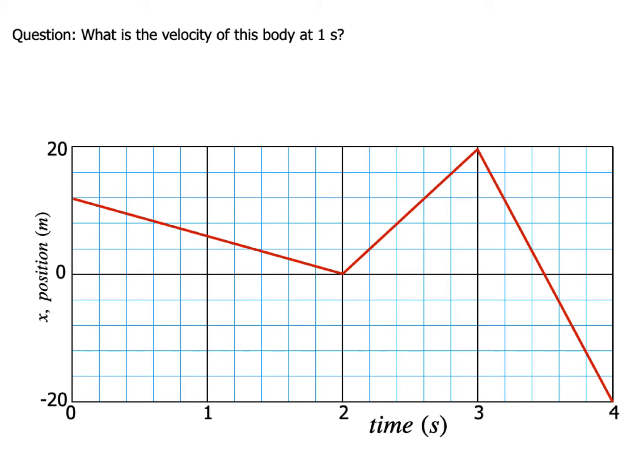So in this graph, I know that it's a position versus time graph, and the slope on a position versus time graph is the velocity. So what I need to do is figure out the slope at one second, or the slope of the line that contains one second.